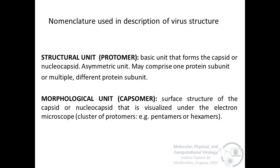It is also important to understand two important terms when we're talking about viral structure. One important concept is the structural unit or protomer, which is the basic unit that forms the capsid or nucleocapsid, and it is an asymmetric unit that comprises one protein subunit or several, and the same subunit or different protein subunits. And on the other hand, the morphological unit, or capsomer, which is the surface structure of the capsid or nucleocapsid that is visualized under the electron microscope. The cluster of protomers are, for example, pentamers or hexamers, which we will talk about later.